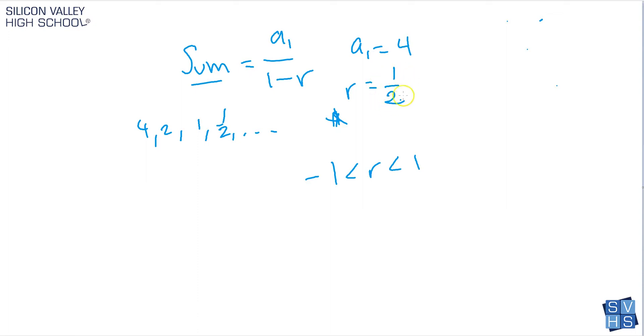In this case, our r is a half. A half is less than 1 and a half is bigger than negative 1. So we're cool. This is going to work. So I'm going to go ahead with you and we're going to find the sum of this. And then after, I'll show you a few examples when r does not work.